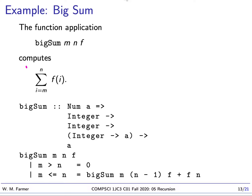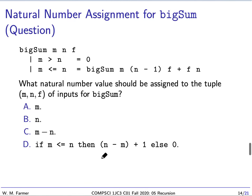I have a question now. Remember I said that you can write down recursive definitions that don't make sense, and in order to show that they do make sense, we have to assign to every input a natural number and verify that recursive calls are always made to an input with a smaller natural number. Here we have three inputs. With these three inputs, I have to assign a natural number to the triple. So the question is: what natural number value should be assigned to the tuple (m, n, f) of inputs for big sum?